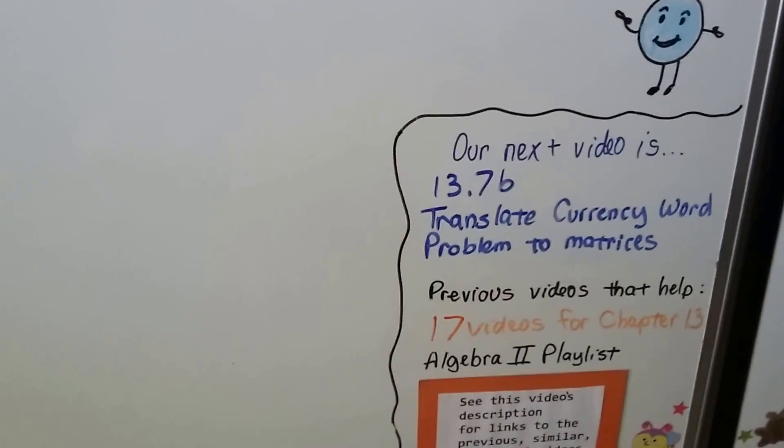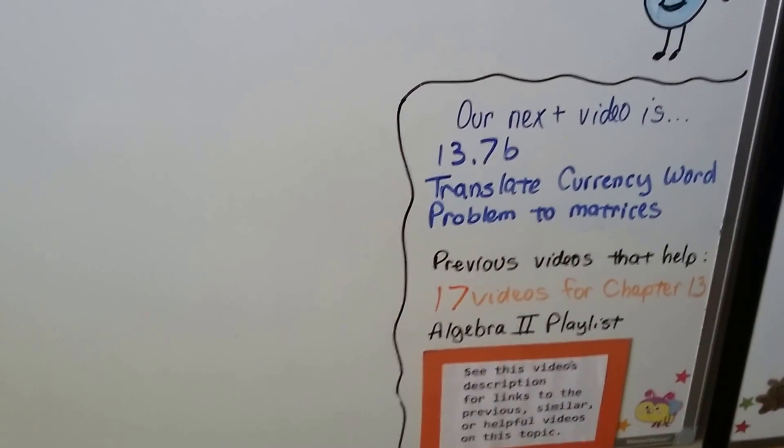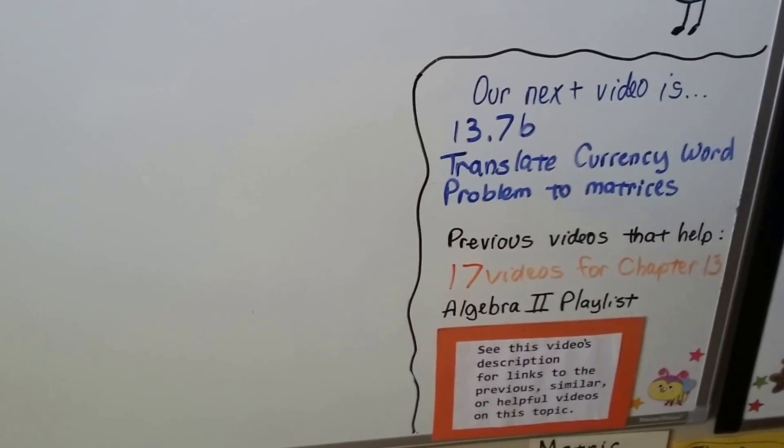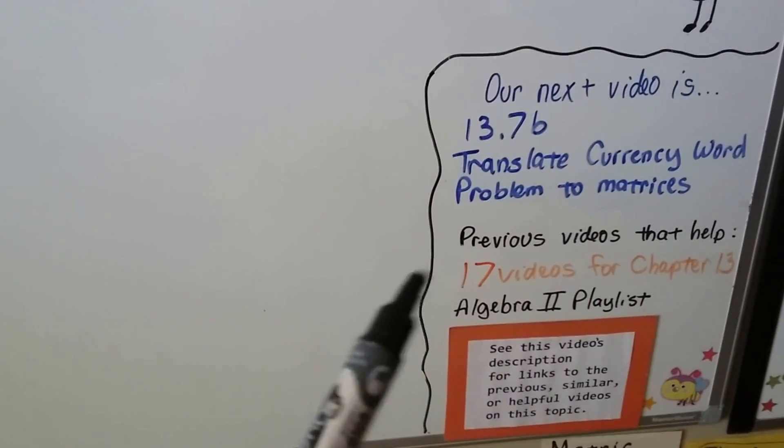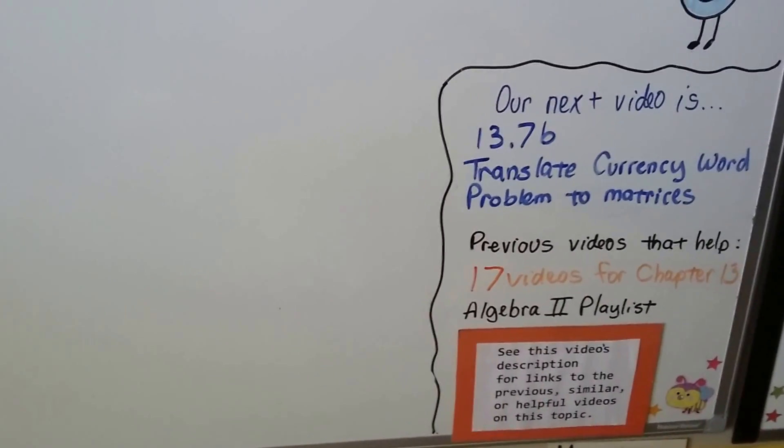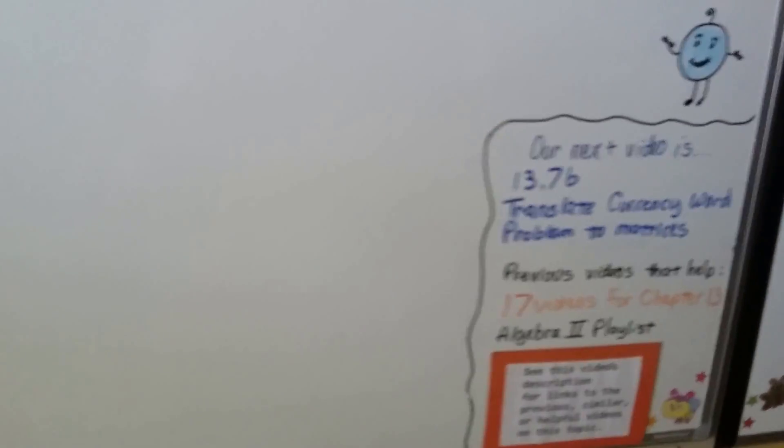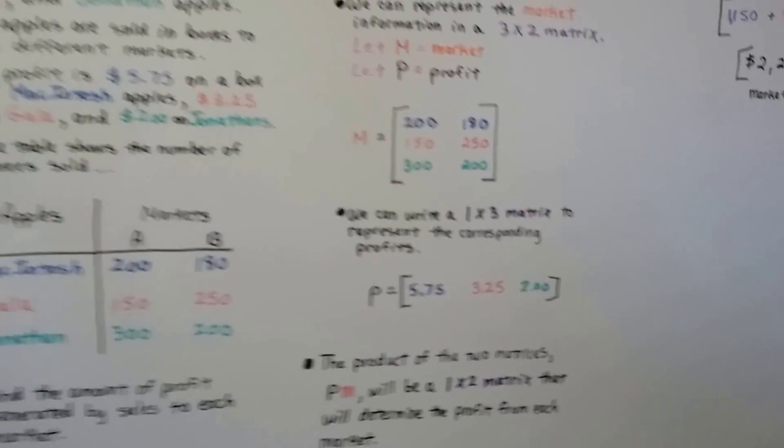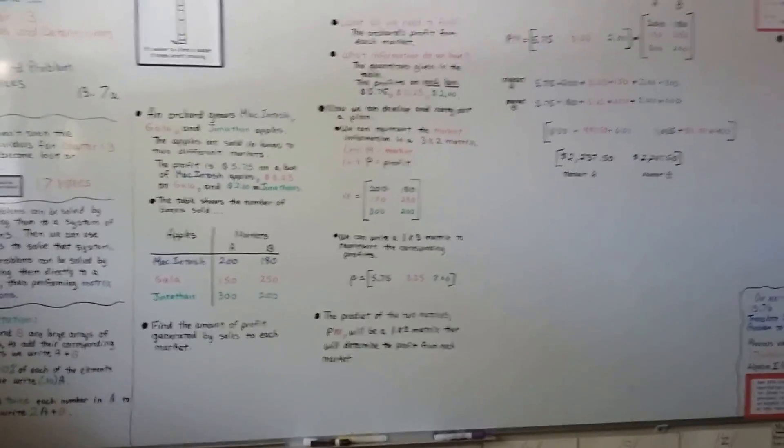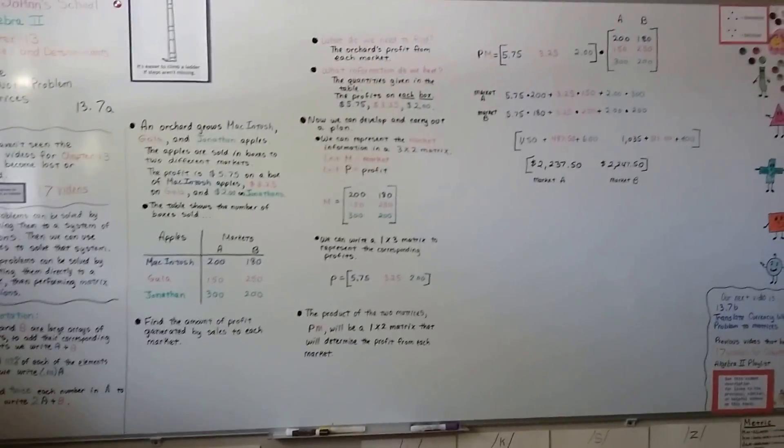In our next video, 13.7b, we're going to translate a currency word problem to matrices. Find out how many tens, ones, twenties, and fives are in the word problem. There's going to be a link to those 17 previous videos for Chapter 13, and I'm going to add this to the Algebra 2 playlist. We're almost done with Algebra 2. I'll see you next video. Bye.